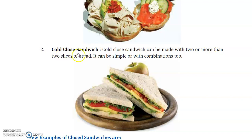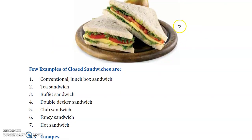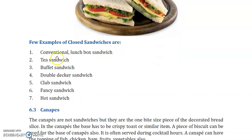A cold closed sandwich can be made with two or more slices of bread. Types of cold closed sandwiches include the conventional lunch box sandwich, tea sandwich which we can eat in the morning, buffet sandwich cut into small pieces, double decker made with 3 pieces, and club sandwich available in different varieties.